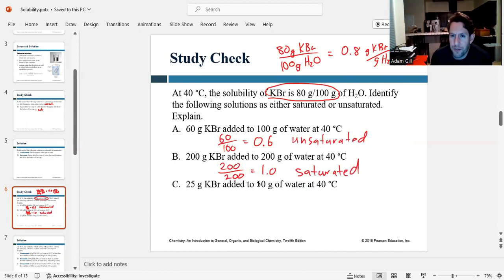And the third situation here, if you have 25 grams of KBr in 50 grams of water, so 25 over 50 is the same thing as 0.5. And so 0.5 is less than 0.8. So this would also be unsaturated.